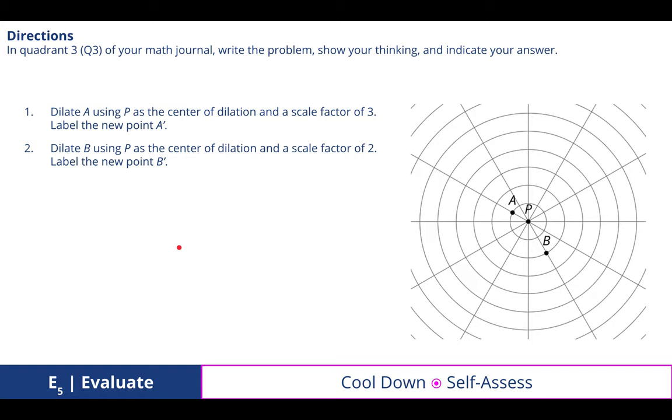In quadrant three of your math journal for our cool down, we self-assessed by examining this polar coordinate system and looking at the distance from the center of dilation P to A versus P to B. Dilate A using point P as the center of dilation and a scale factor of 3. If I take that as a scale factor of 3, it would land right here because it's three times as far away as A is from P. Dilating B using P as the center of dilation and a scale factor of 2, because it's already two units away from that center of dilation, multiplying that by a factor of 2 will give us 4, which means B' would be located right there on the red dot.